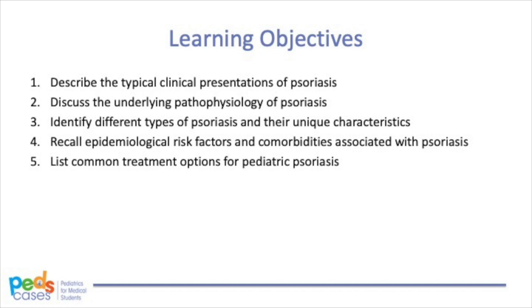After listening to this podcast, we expect the learner to be able to: Number one, describe the typical clinical presentations of psoriasis. Number two, discuss the underlying pathophysiology of psoriasis. Number three, identify different types of psoriasis and their unique characteristics. Number four, recall epidemiological risk factors and comorbidities associated with psoriasis. Number five, list common treatment options for pediatric psoriasis.